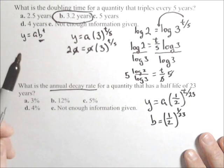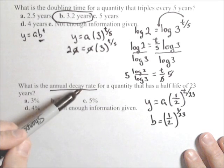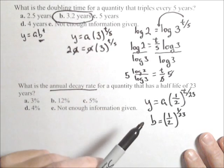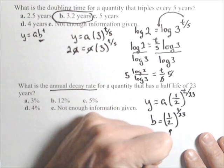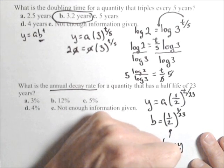Now, just like a growth rate, it's always your growth factor minus one. A decay rate is always your decay factor minus one. This is our decay factor.